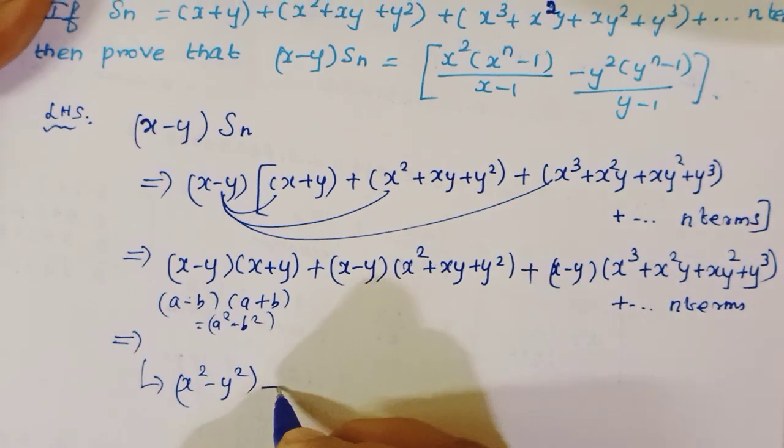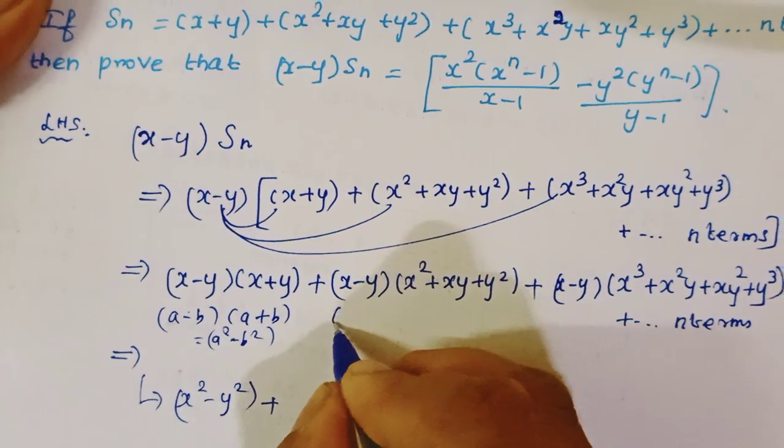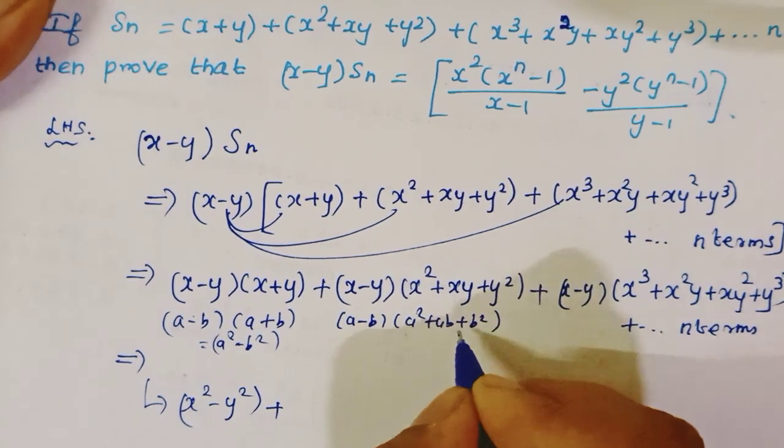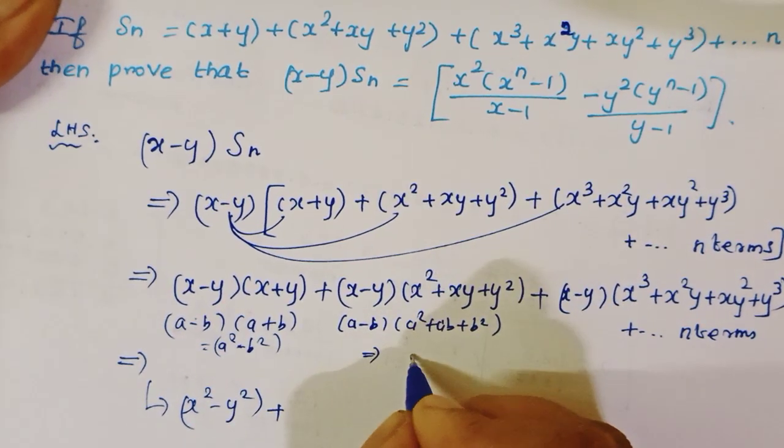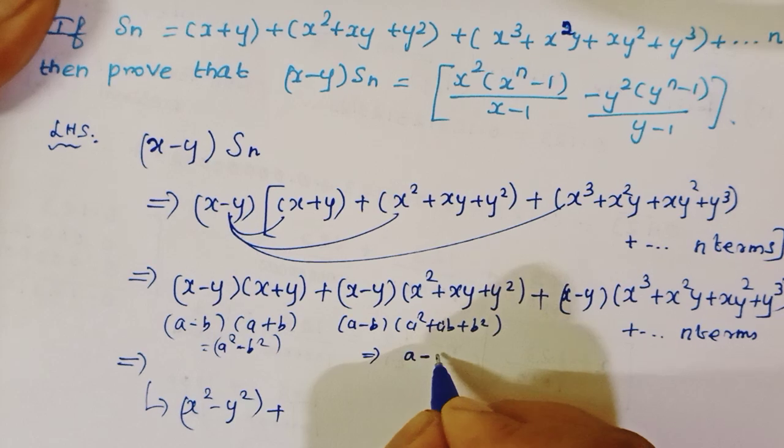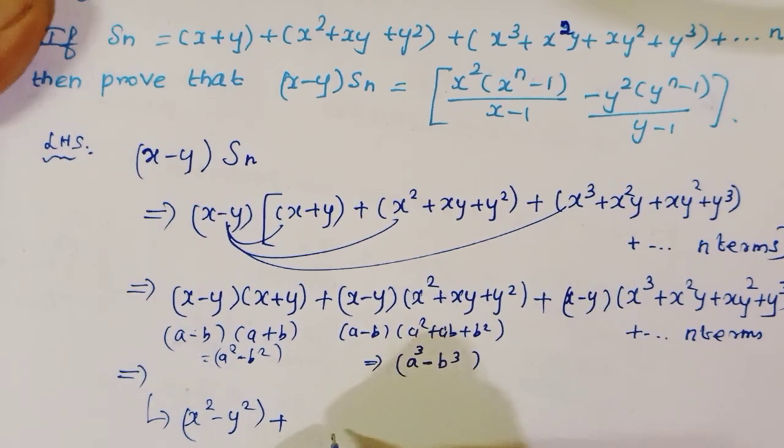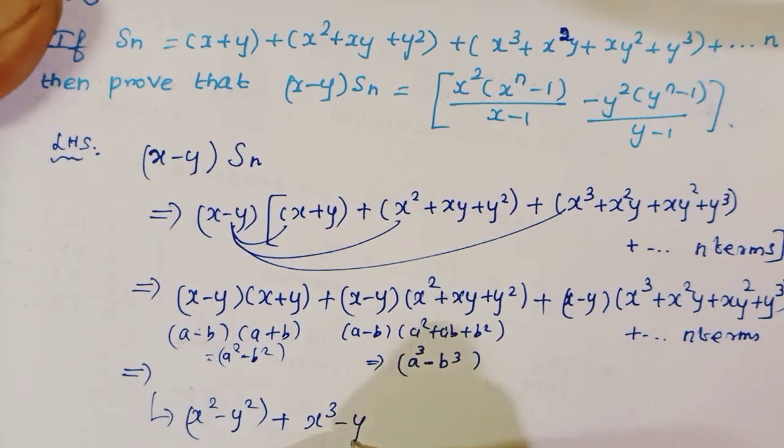Using identity, (a-b)(a+b) formula gives a²-b², then (a-b)(a²+ab+b²) gives a³-b³.